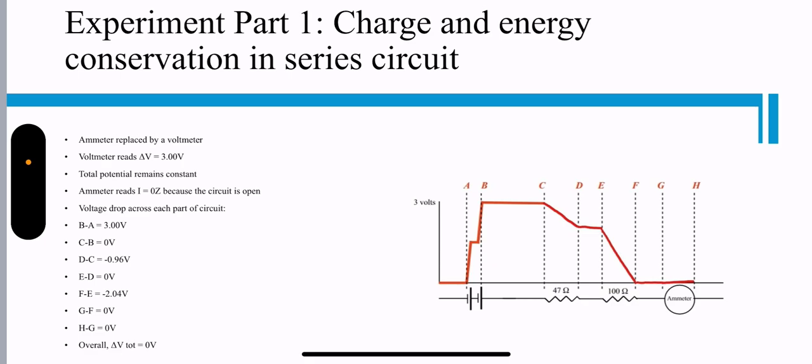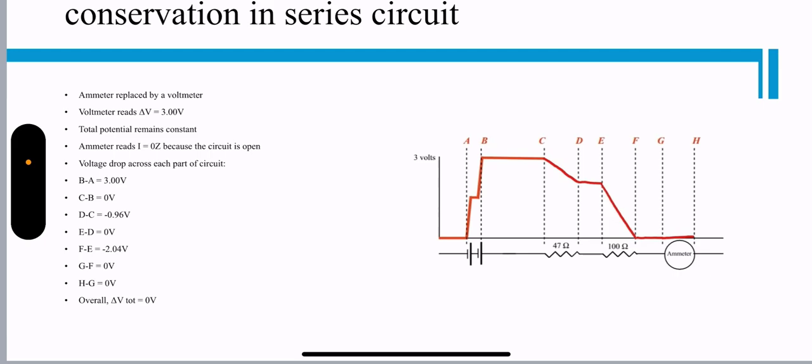Experiment part one: Charge and energy conservation in circuits. Ammeter is replaced by a voltmeter. Voltmeter reads delta V of three volts. Total potential remains constant.